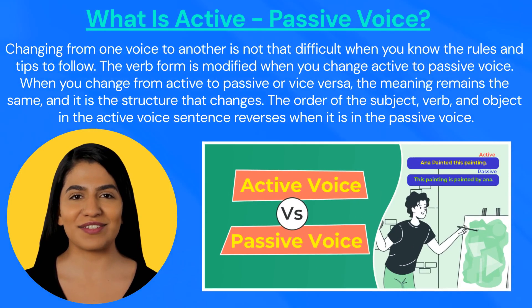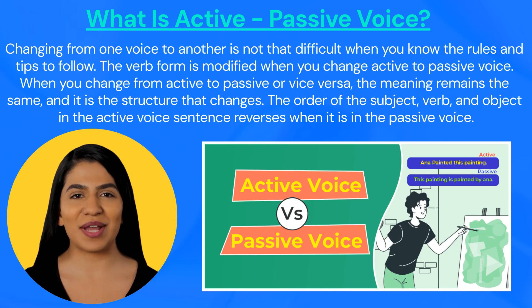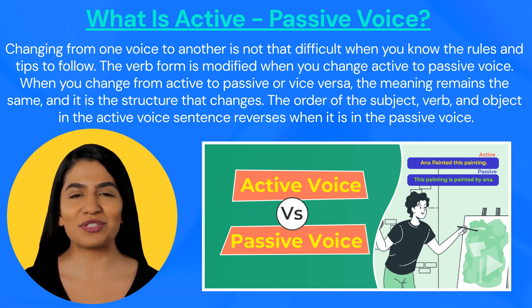What is Active Passive Voice? Changing from one voice to another is not that difficult when you know the rules and tips to follow. The verb form is modified when you change active to passive voice. When you change from active to passive or vice versa, the meaning remains the same and it is the structure that changes. The order of the subject, verb, and object in the active voice sentence reverses when it is in the passive voice.